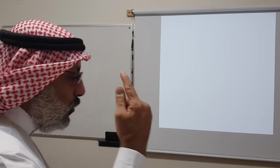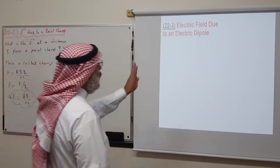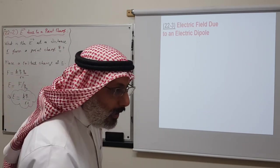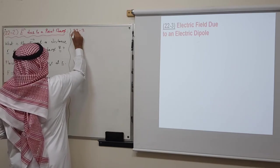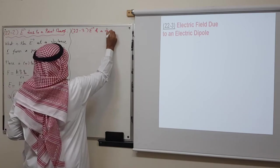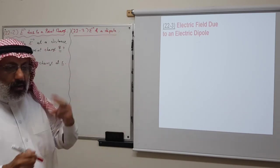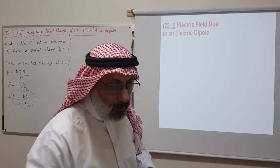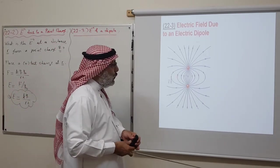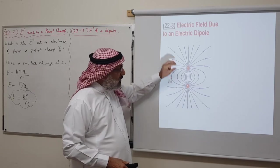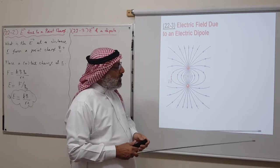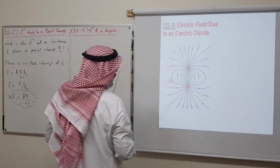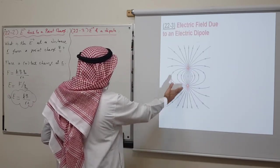Instead of a single charge, let's find the electric field produced by two charges — the electric dipole. An electric dipole consists of two equal but opposite charges: the same magnitude Q, one positive and one negative, separated by a distance D. The prefix 'di' means two; we can also have quadrupoles or octupoles for more charges. The electric field produced by these two charges is very complicated and greatly distorted compared to a single sphere of charge.